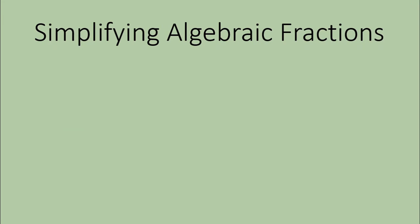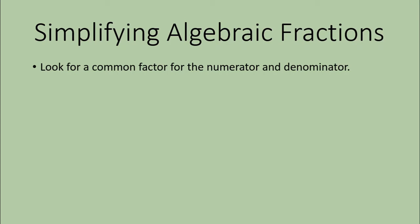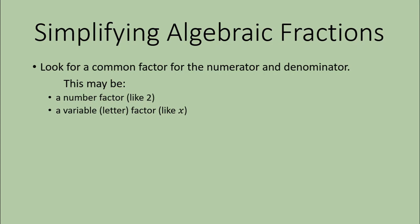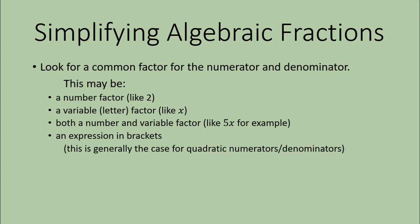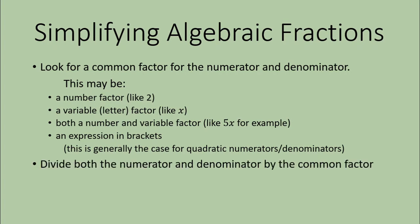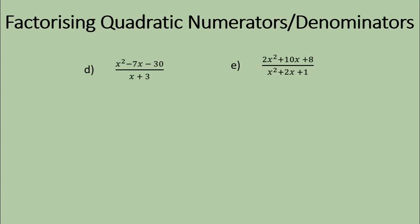To clarify how we simplify algebraic fractions: first, look for a common factor for the numerator and denominator. This may be a number factor, a variable or letter factor like x or x squared, or both combined like 5x or 2ab. In the hardest cases, it might be an expression in brackets — that's generally the case when you have a quadratic as your numerator or denominator, where you need to factorize that quadratic. Once you've found your common factor, divide both the numerator and denominator by it.